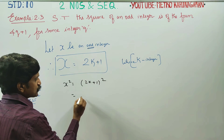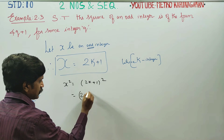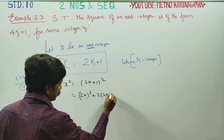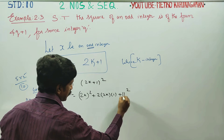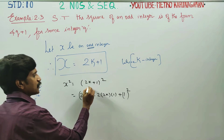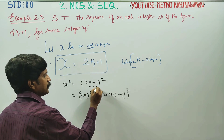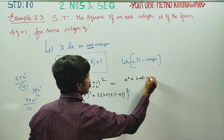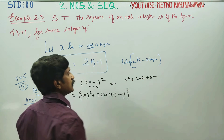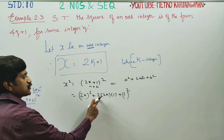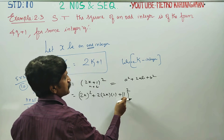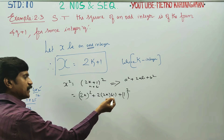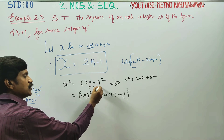What is (a + b) whole squared? It is a squared plus 2ab plus b squared. So (a + b) whole square formula: first part squared, plus 2 times first part into second part, plus second part squared. We will use this formula.